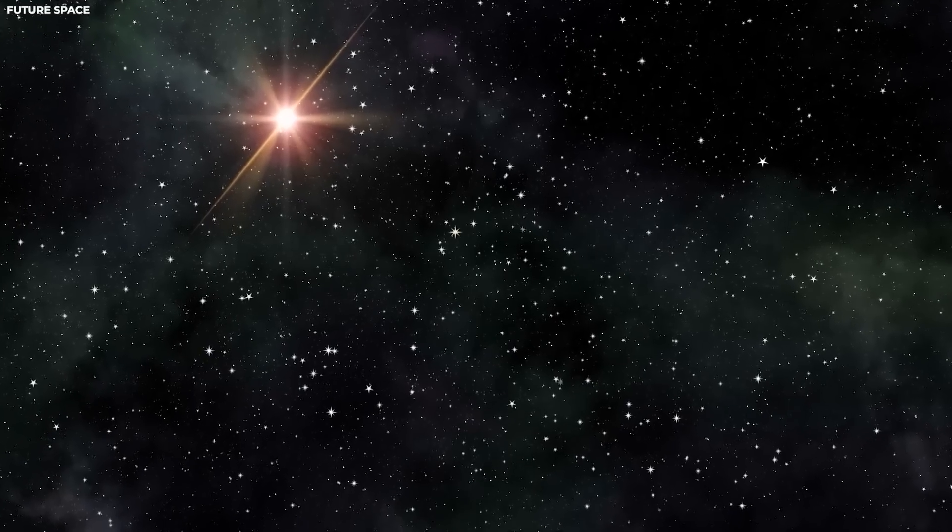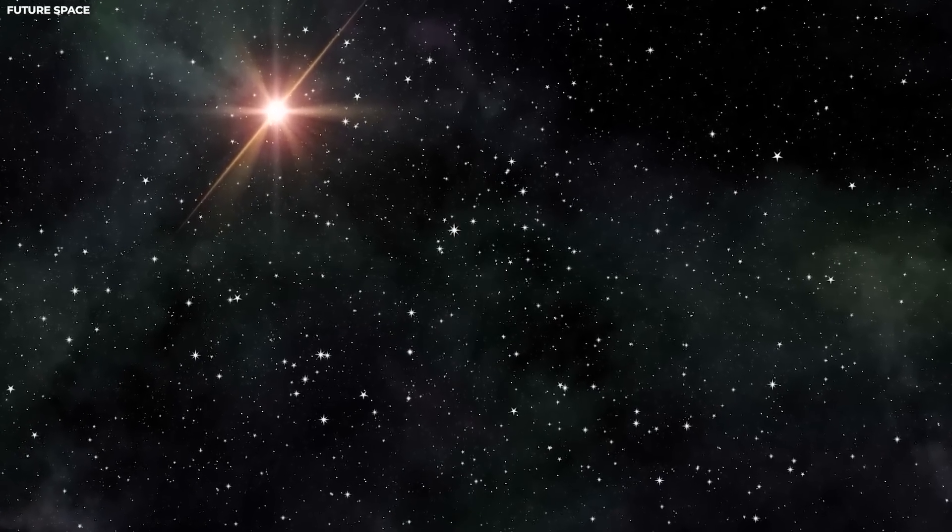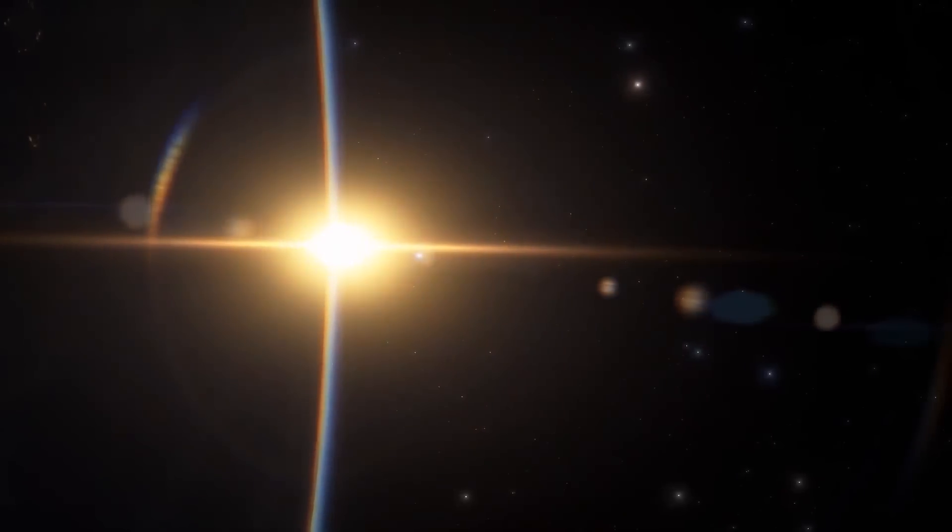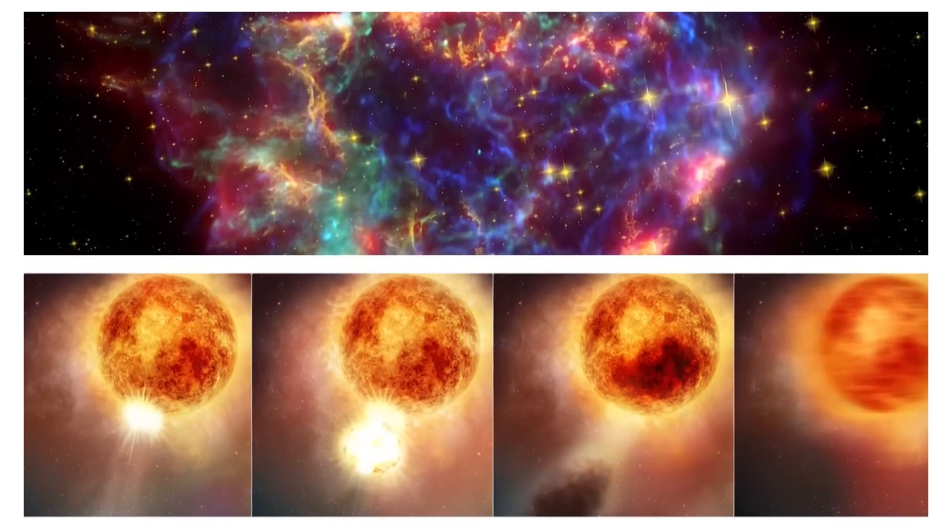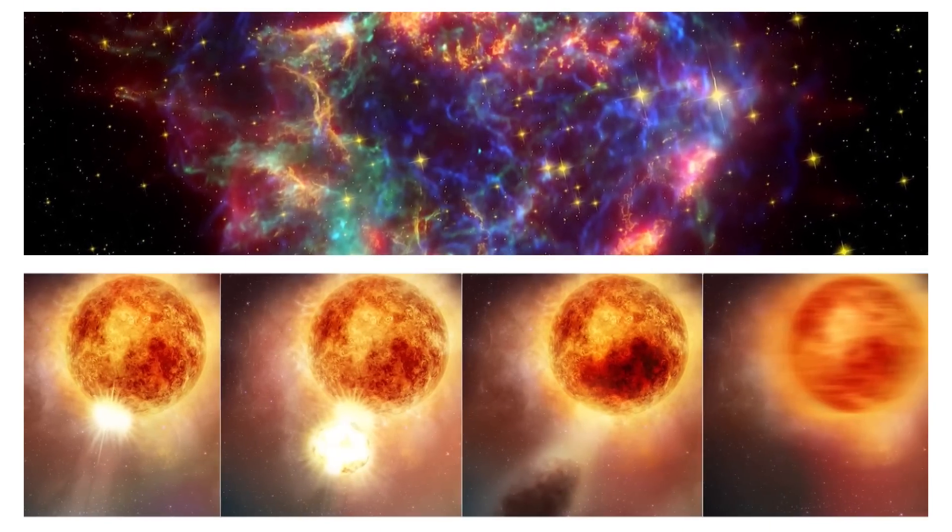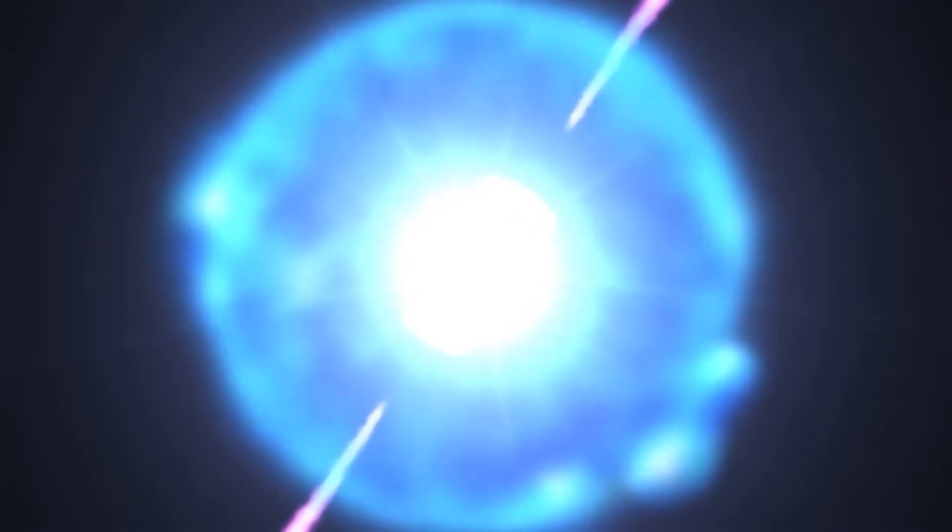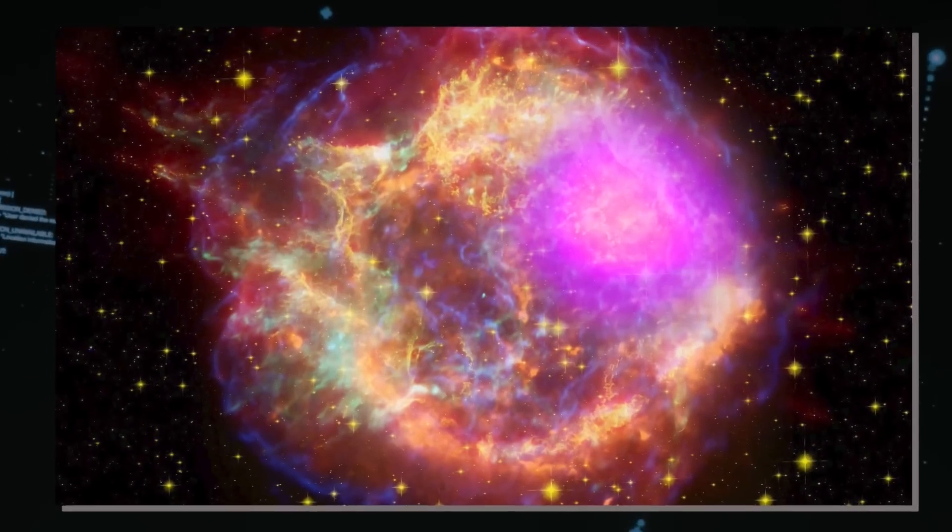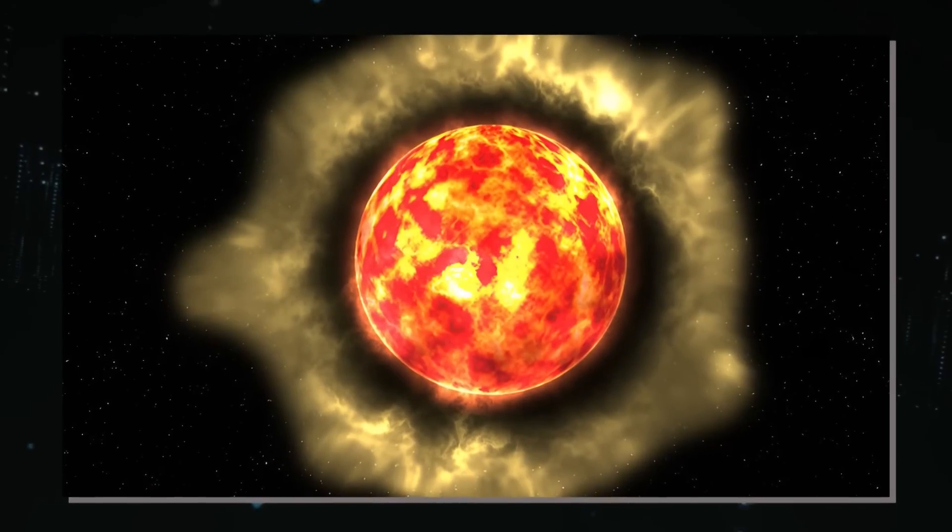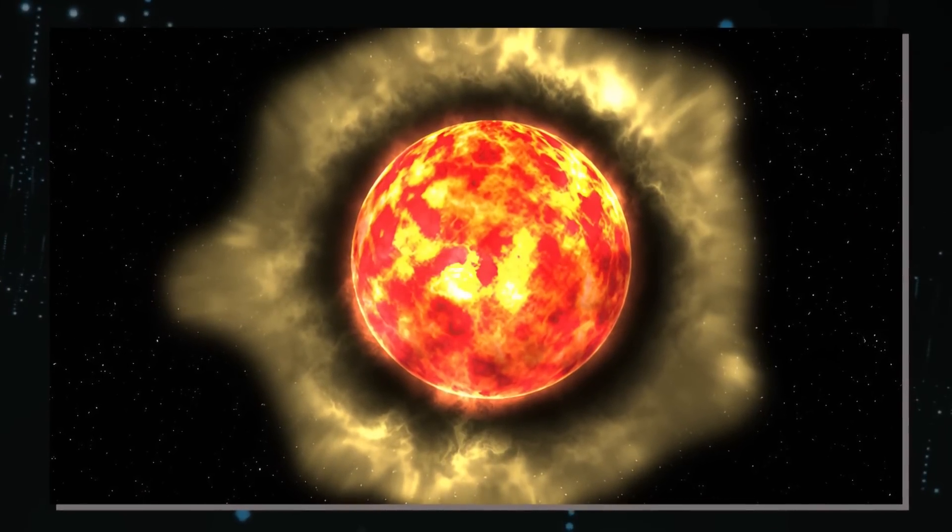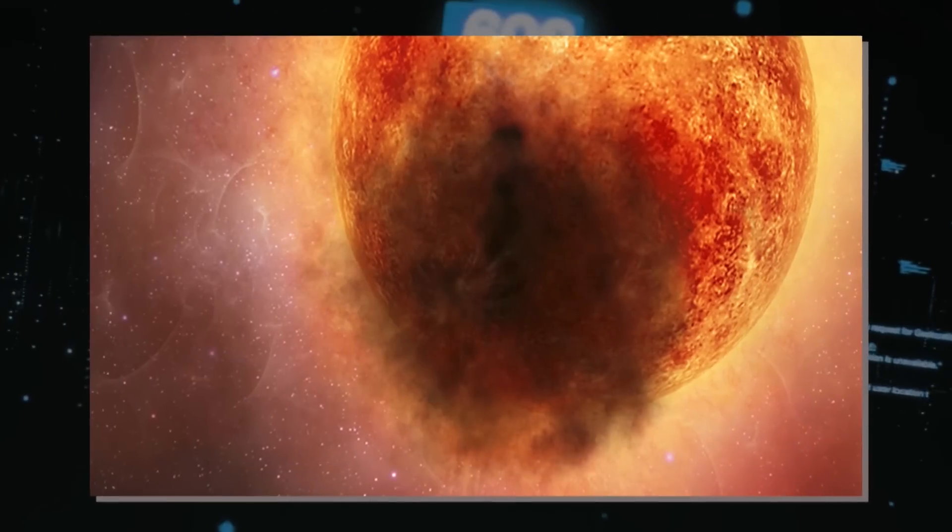Another reason is the observation of the star's pronounced dimming. While dimming can be attributed to several factors, such as dust clouds or stellar pulsations, the rapid and significant decrease in brightness could also be indicative of a star nearing the end of its life. Before a star goes supernova, it might undergo a phase where it ejects a significant portion of its outer layers, leading to such dimming events.